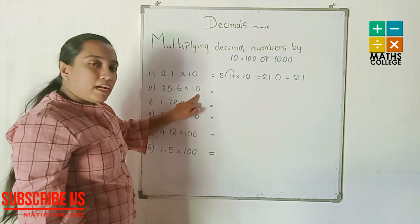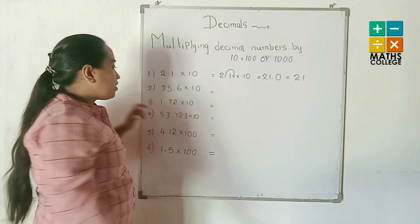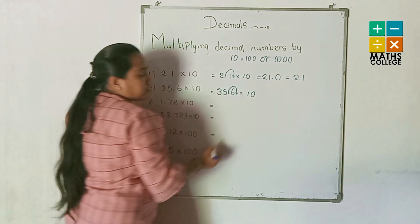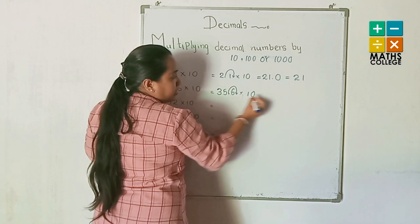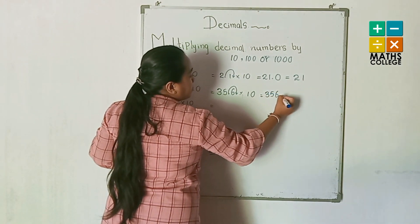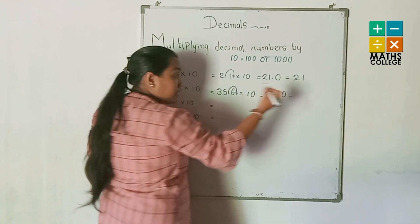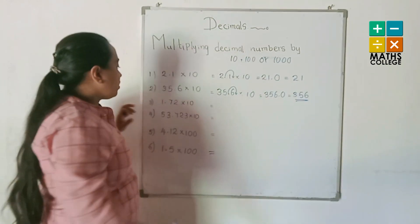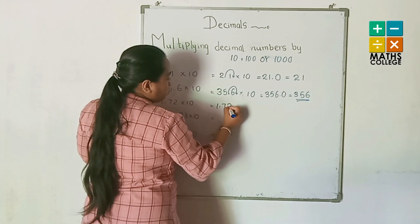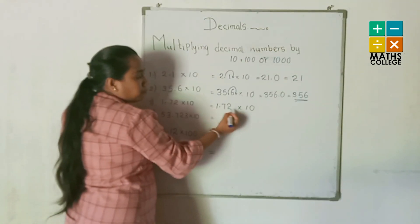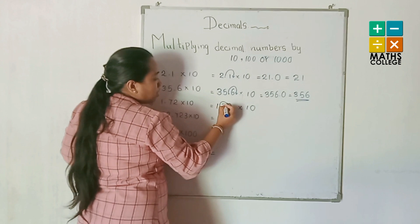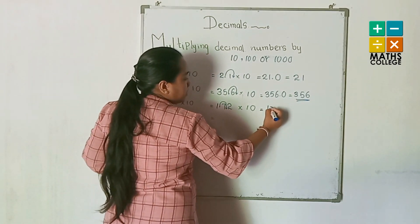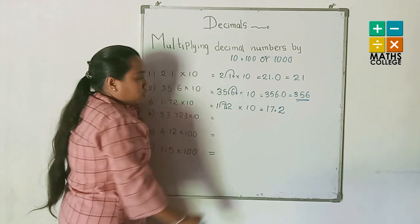Second ×10 example: 35.6 multiplied by 10. Ten has one zero, so the decimal point jumps one place to the right — the answer is 356.0, written as 356. Third example: 1.72 multiplied by 10. The decimal point jumps one place to the right, landing between 7 and 2 — the answer is 17.2.